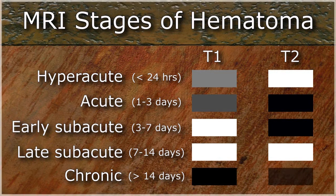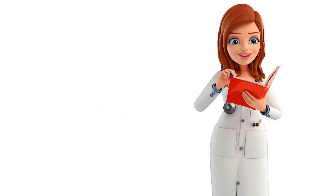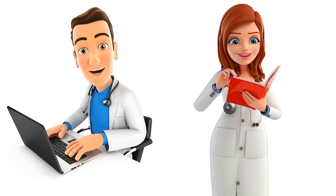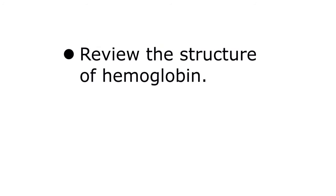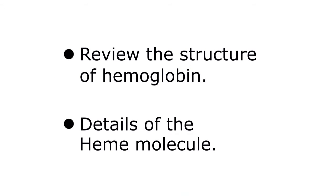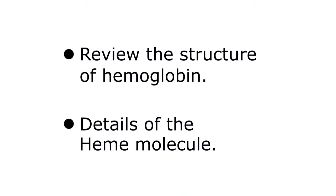— dark on T1 and dark on T2. Most of us simply memorize this chart for the test or look it up when we see a bleed on the MRI submitted for interpretation. But over the next few minutes, in an effort to help you actually understand rather than rotely memorize these signal changes, we're going to review the overall structure of hemoglobin with details of the heme molecule, which is predominantly responsible for the observed signal changes.